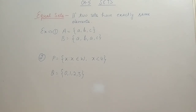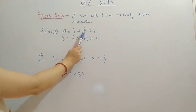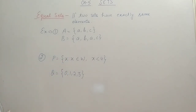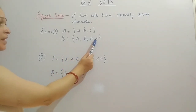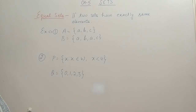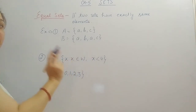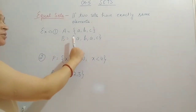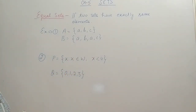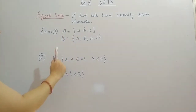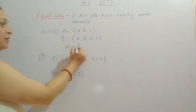Next we have equal sets. If two sets have exactly the same elements, we call them equal sets. For example, A = {A, B, C} and B = {A, B, A, C}. In sets, if any element is repeated we count it only once. So B effectively has elements A, B, C — the same as A. Also, the arrangement does not matter. So A and B are equal sets: A = B.